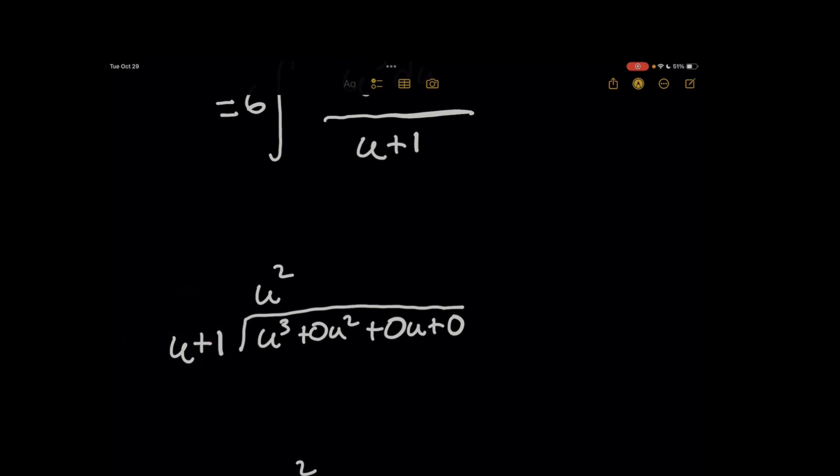And then for the right, take the highest power of the dividend, which is u cubed. We want to figure out what do you multiply u by to get u cubed. Well, it's u squared, right?